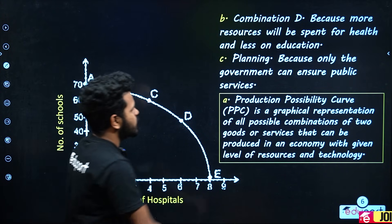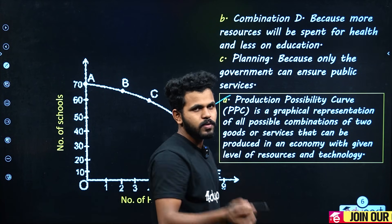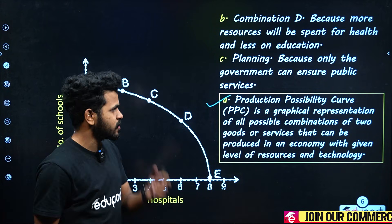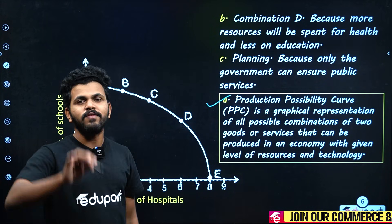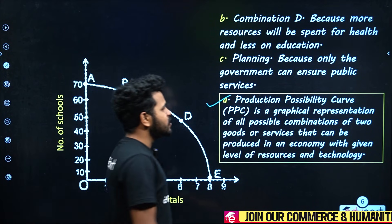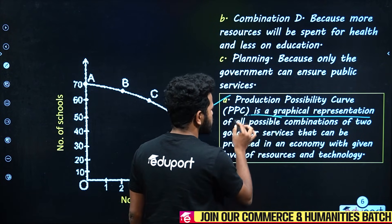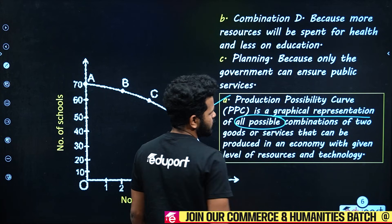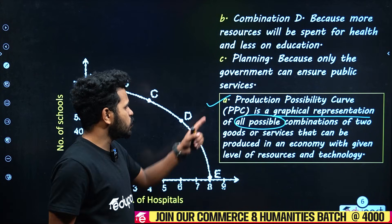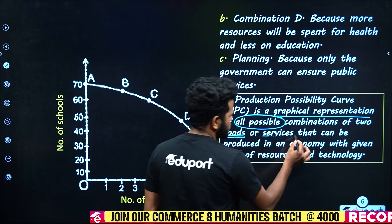Let's talk about the definition of the production possibility. It is the graphical representation of all possible outcomes — two goods or two services — that the economy can produce.